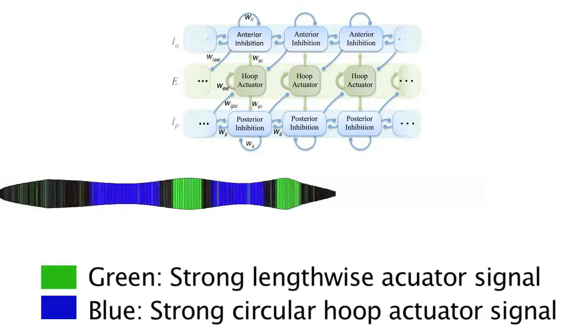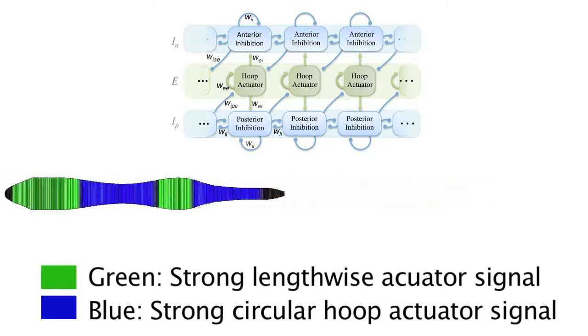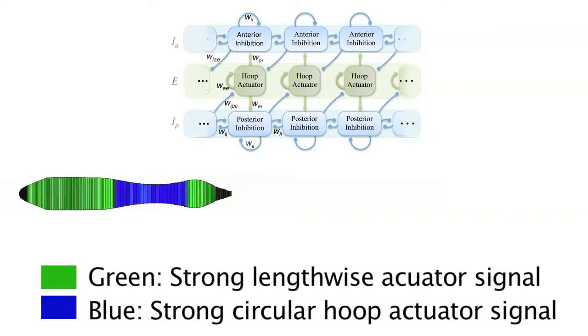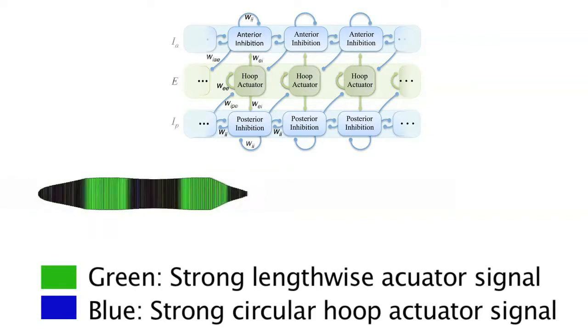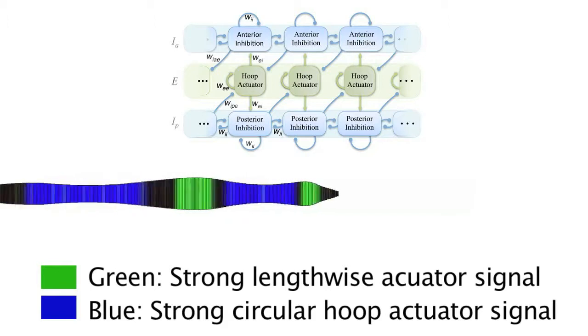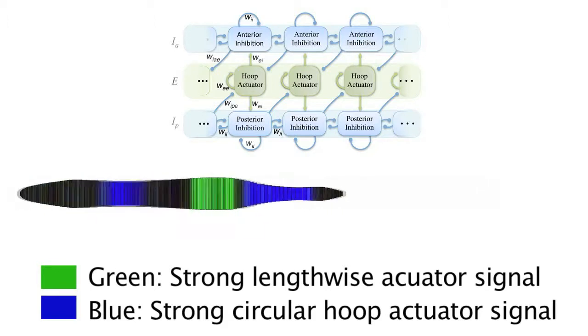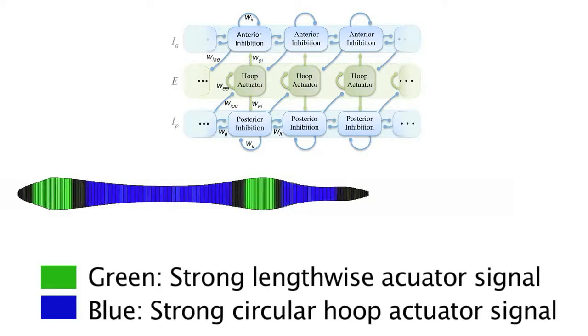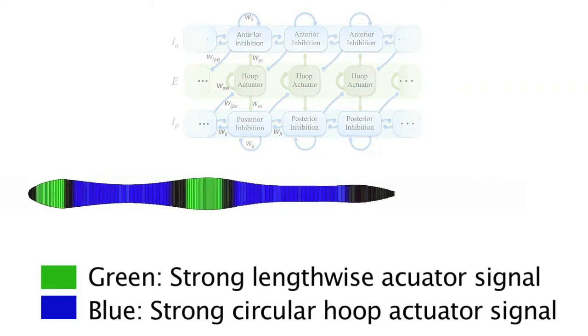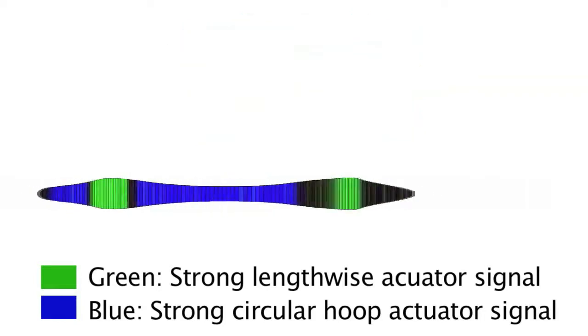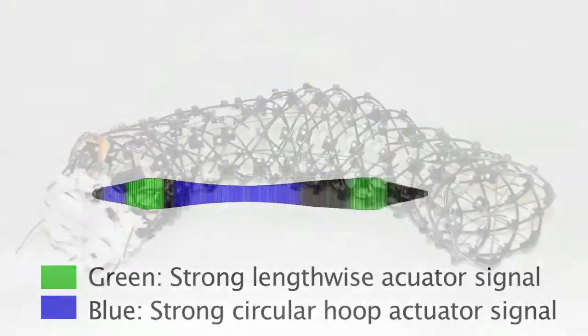Our controller is based on a dynamical model of simulated neuronal populations. This network can generate waves of motion that vary in both spatial and temporal frequency. It can slow to a complete stop and resume again based on descending signals. The structure of the network also makes it amenable to the large amount of sensory input required to achieve highly adaptive and robust burrowing behavior.